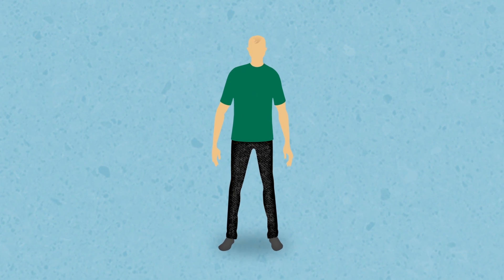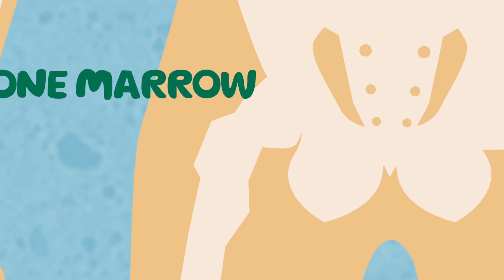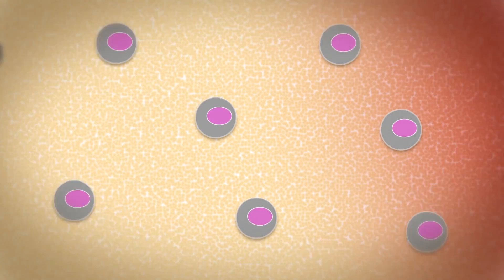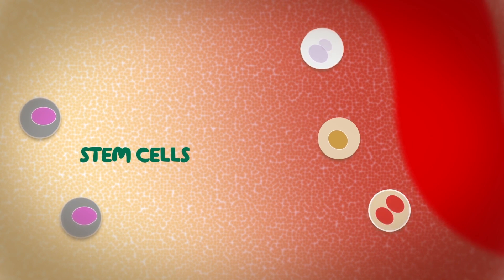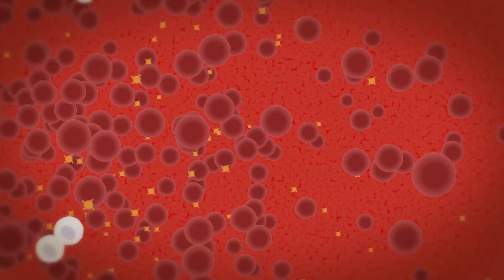How blood cells are made: Inside our bones, a spongy material called bone marrow constantly creates stem cells. All blood cells begin as stem cells, and as they divide, they develop into three different types of blood cells.